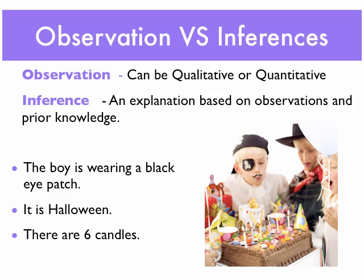Maybe it's a Halloween party, maybe it's a birthday party. So we're basing our explanation on our observations and our prior knowledge. There are six candles — that would be a quantitative observation. So we can actually count: one, two, three, four, five, six. Quantitative — a quantity.